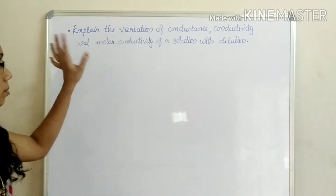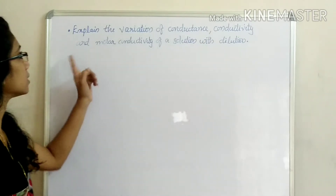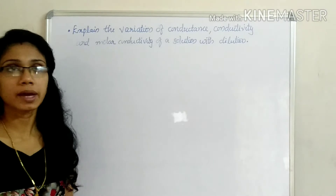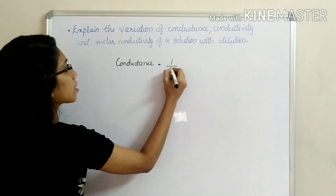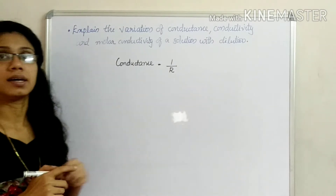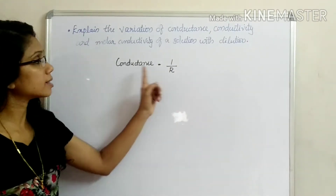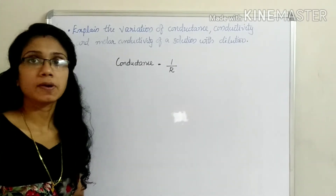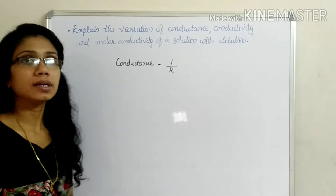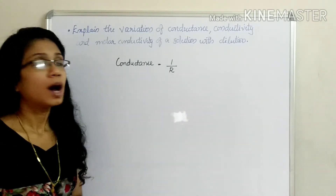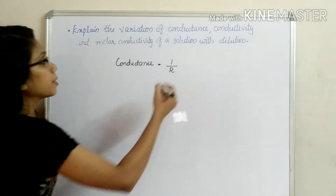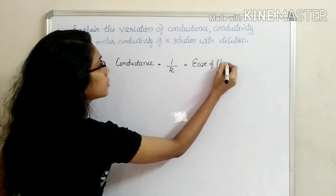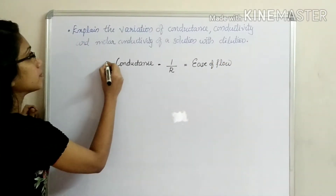There are three terms: conductance, conductivity, and molar conductivity. Conductance is 1 by R. Resistance is the reciprocal of conductance. Resistance is the resistance to flow, while conductance is the ease of flow.